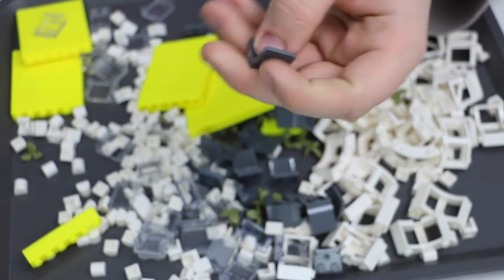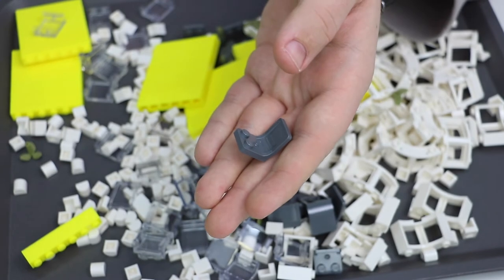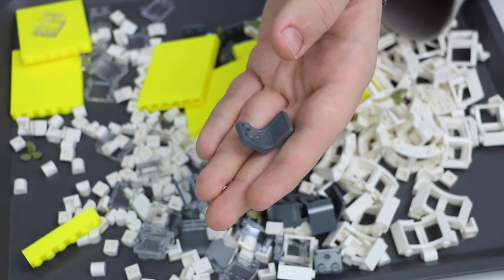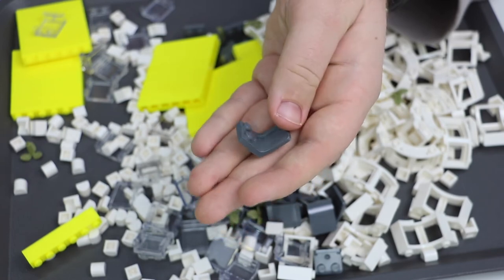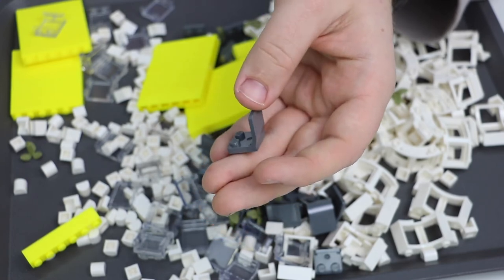They also had some chairs at the Pick-a-Brick wall, which is really cool. I've got a lot of brown ones from previous times I've been to the Pick-a-Brick wall, but I've never actually got dark bluish gray ones. So I thought I'd include those and kind of fill up my chair collection.